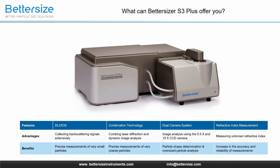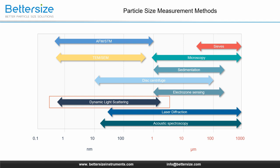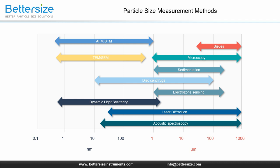Let me start with a brief introduction to particle sizing. The measurement range of different methods spans from 0.1 nanometers to 1000 microns. For example, the well-known sieve analysis is suitable for measuring micron-sized particles, and dynamic light scattering is for measuring nano and sub-micron particles. For laser diffraction, it is appropriate to measure micron-sized particles with a wide range, covering from tens of nanometers to several microns. Since the 1970s, laser diffraction has become one of the most important and widely accepted methods for the determination of particle size distribution.